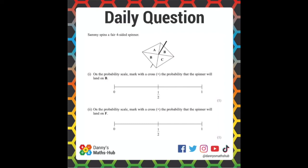Sammy spins a fair four-sided spinner. On the probability scale, mark with a cross the probability that the spinner will land on B. That is two Bs out of a possible four outcomes, so there's a half.